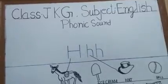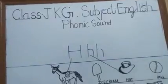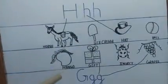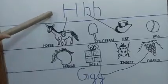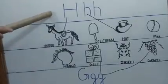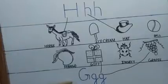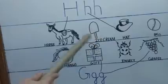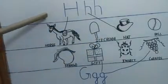Hello kids, today we will do an activity of phonic sound. Look here — here are some pictures and here are phonic sounds. That is G. So we will find out which picture starts with this phonic sound.